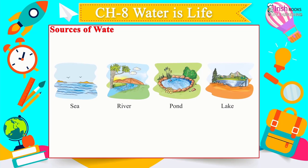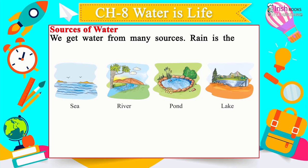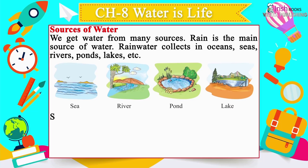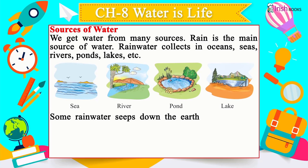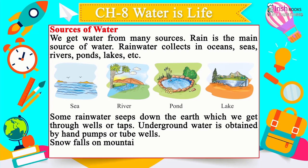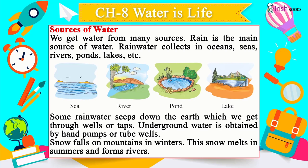Sources of Water: We get water from many sources. Rain is the main source — rainwater collects in oceans, seas, rivers, ponds and lakes. Some rainwater seeps into the earth and is obtained through wells or taps. Underground water is obtained by hand pumps or tube wells. Snow falls on mountains in winter and melts in summer to form rivers.